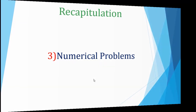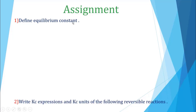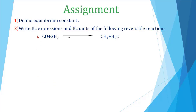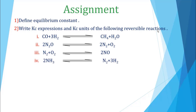Numerical problems 9.1, 9.2, and 9.3 taught us: first write the balanced chemical equation, then write the equilibrium constant expression, and put the given values to find the unknown. Now your assignment: first question — define equilibrium constant. Second question — write the KC expressions and KC units for the following reversible reactions: (1) CO + 3H₂ ⇌ CH₄ + H₂O; (2) 2N₂O ⇌ 2N₂ + O₂; (3) N₂ + O₂ ⇌ 2NO; (4) 2NH₃ ⇌ N₂ + 3H₂. If you do these well, this entire lesson will become easy for you.